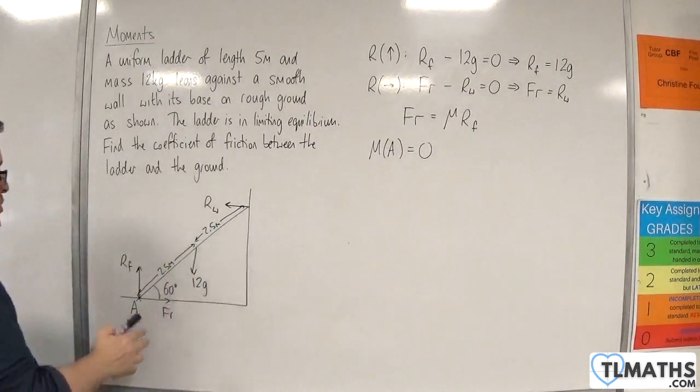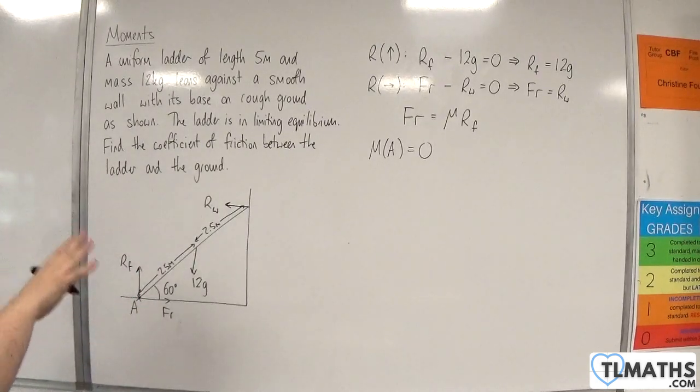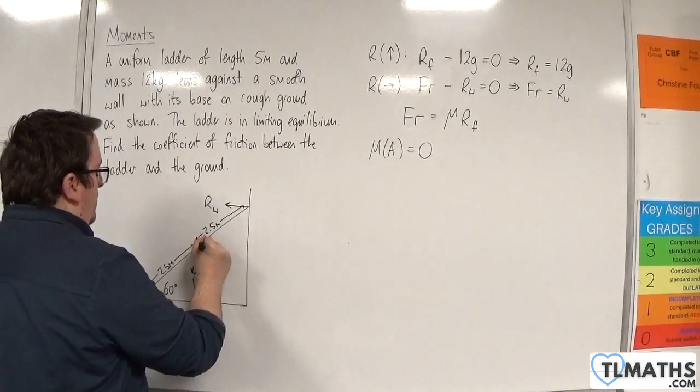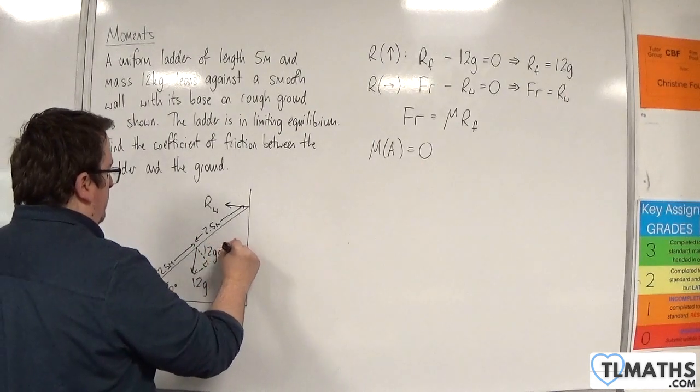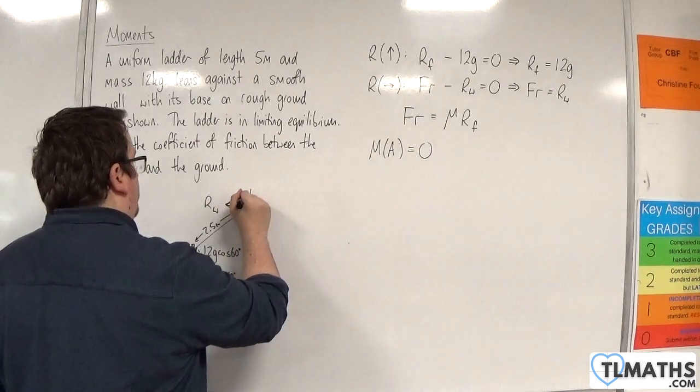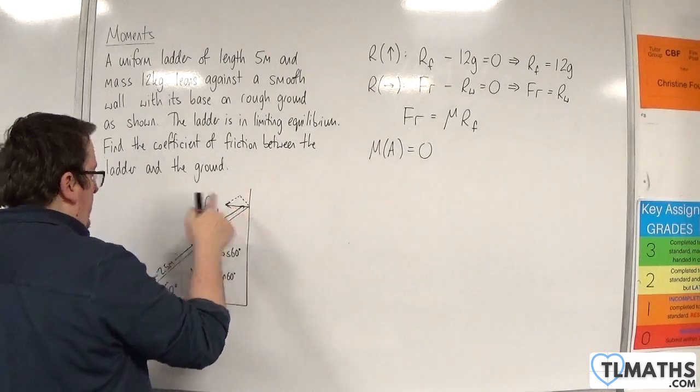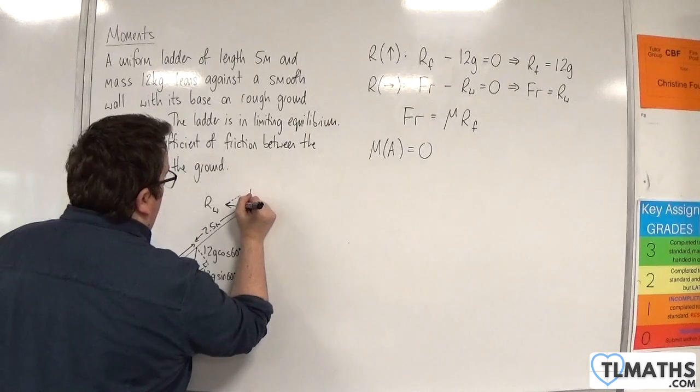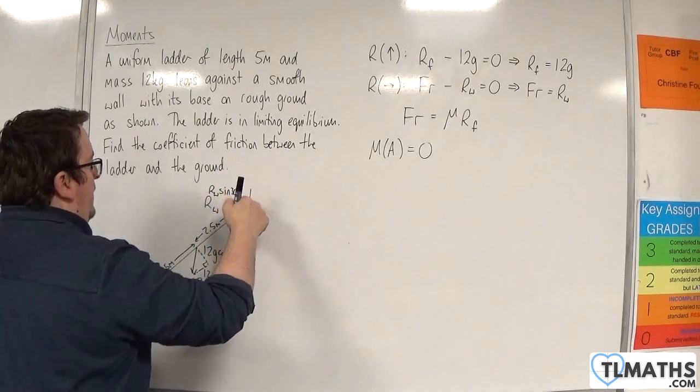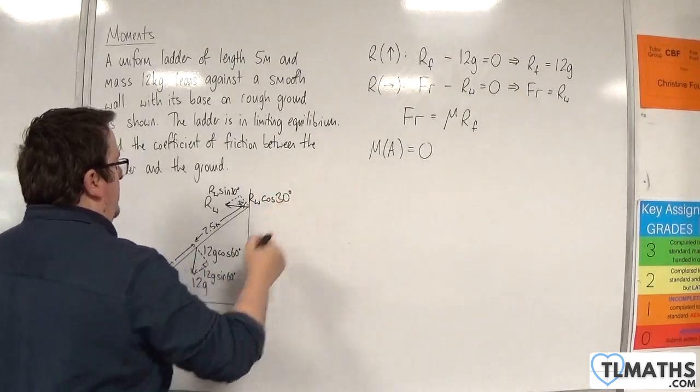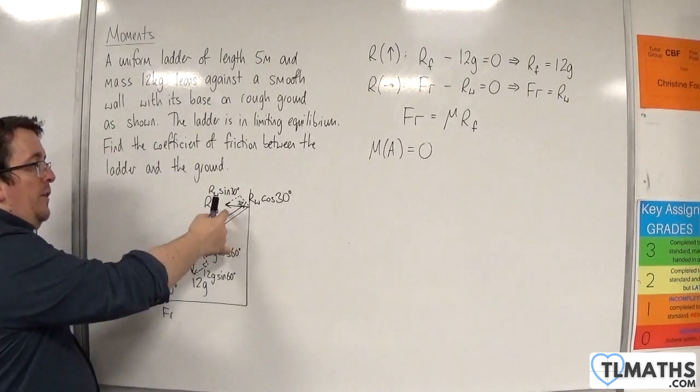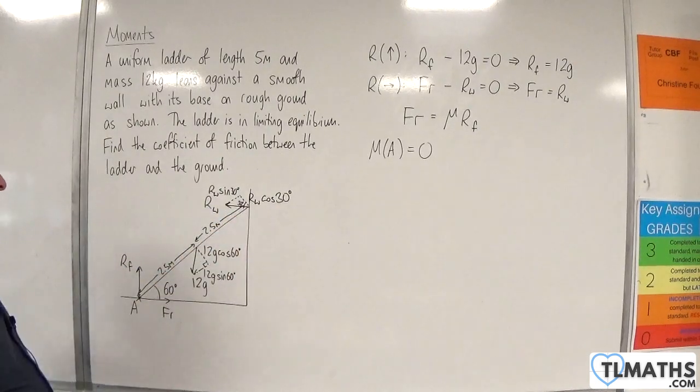Now, in this situation, because I've got the angle, it may be preferable to split the forces up into their components. So I'm going to split the 12g force up into 12g cosine 60 and 12g sine 60. Likewise, I'm going to split the Rw force up into 12g sine 30. Now, you could alternatively have split it up that way, and so you would have had Rw sine 60 and Rw cosine 60. You can do it either way.